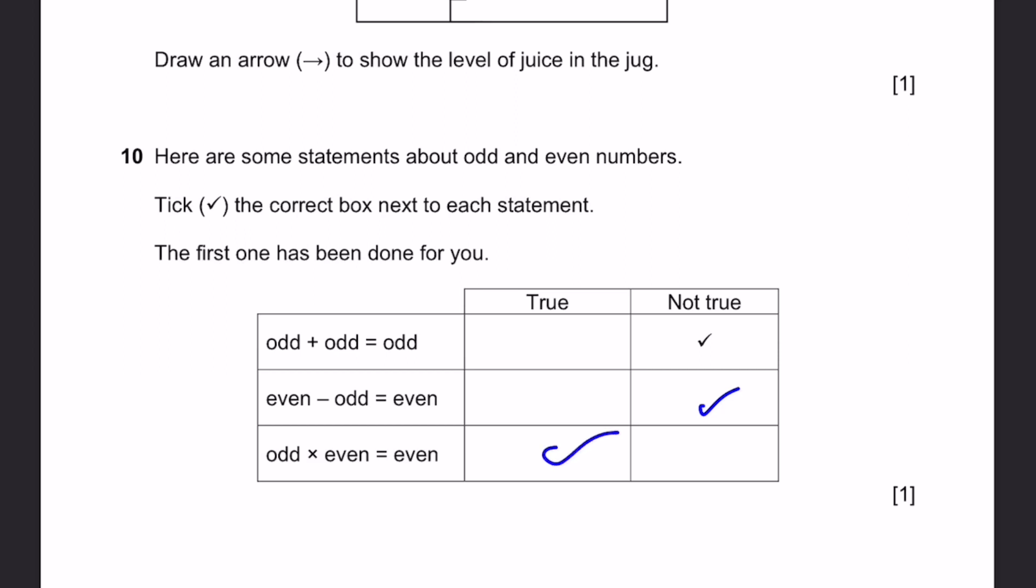Odd into even is even. True. When we take any even number and any odd number, whenever you multiply, for example, 3 times 2, 6. 6 is even number. 3 times 4, 12. 12 is even number. So it's true. You can take it for any combination of odd and even number.